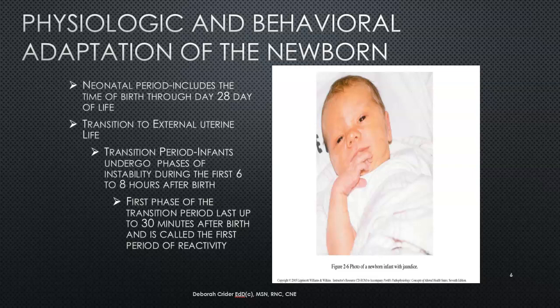The baby for the first 28 days of life is called a neonate, and that period is known as the neonatal period. This is when they're transitioning to external uterine life. The first portion of that transition period involves a high amount of instability, especially in the first six to eight hours of birth. We watch them very closely that first 12 hours. The first phase of the transition period lasts up to 30 minutes after birth and is called the first period of reactivity.